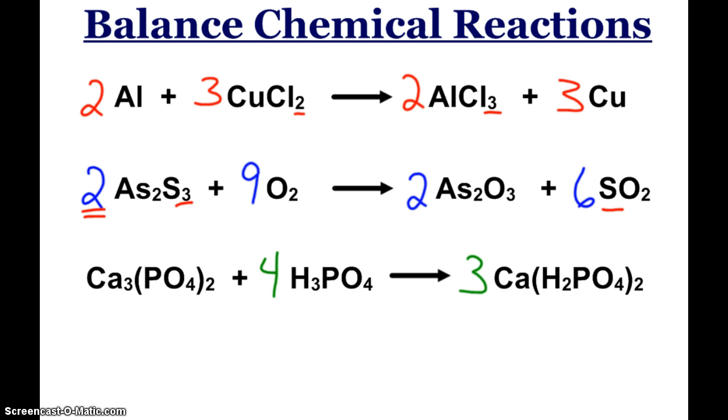And then on the last one, just make sure you're careful with parentheses and what goes in. So you had to make sure that you had 12 hydrogens. 3 times 2 is 6 times 2. There's 12 hydrogens on each side. That was a little tricky there.